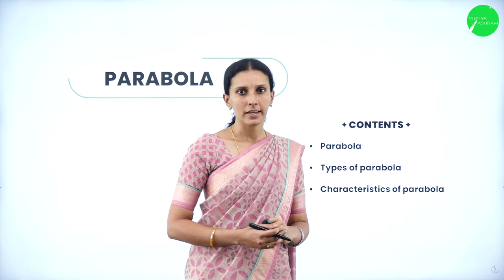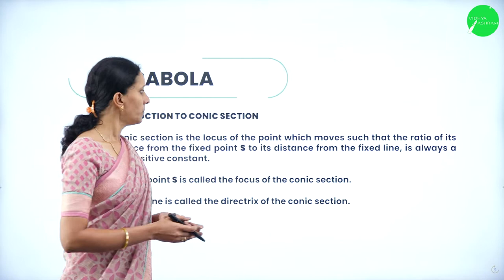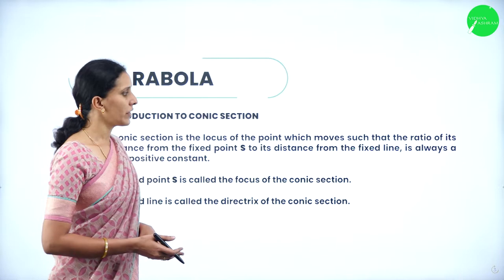Before we study in detail about parabola, we have to note a concept called conic section. A conic section is the locus of a point which moves such that the ratio of its distance from the fixed point S to its distance from the fixed line is always a fixed positive constant.